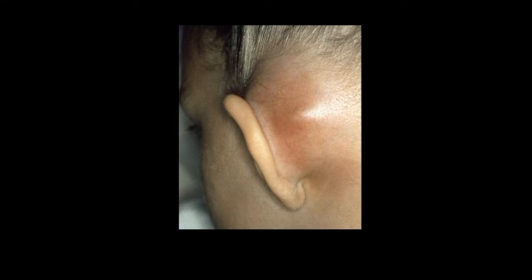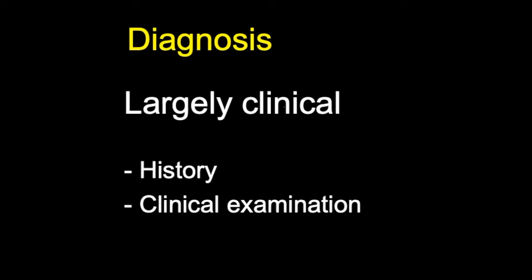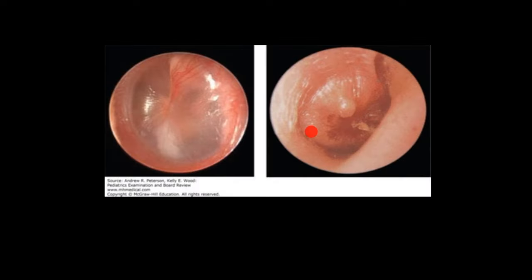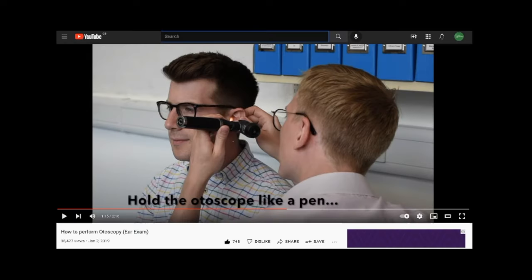Diagnosis is largely clinical. The health professional will ask relevant questions in the history, such as which ear is infected and whether the patient has had a temperature or recent ear infection. They'll then perform a clinical examination of the ear looking for the signs already discussed, and also look inside the ear using an otoscope, where they might see the bulging eardrum. There's another video on this channel on how to perform otoscopy, linked in the description box.